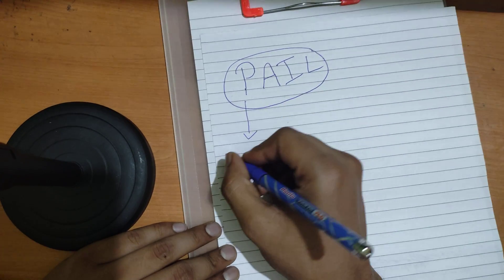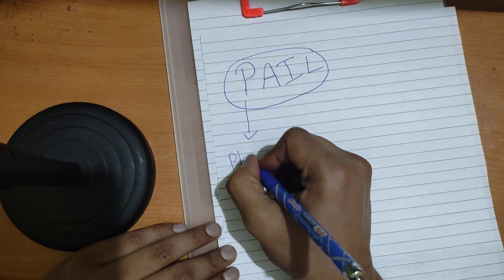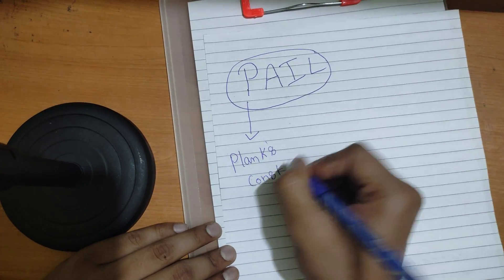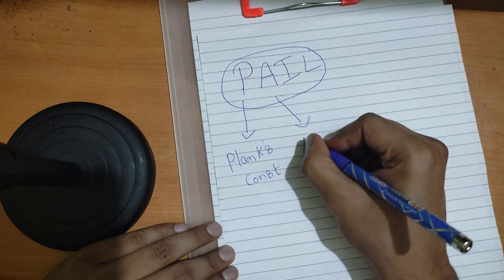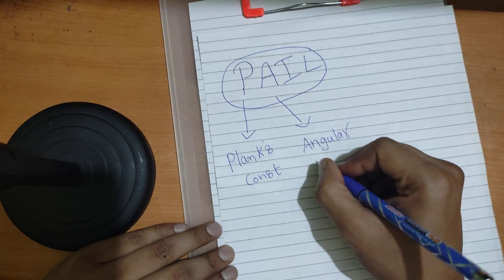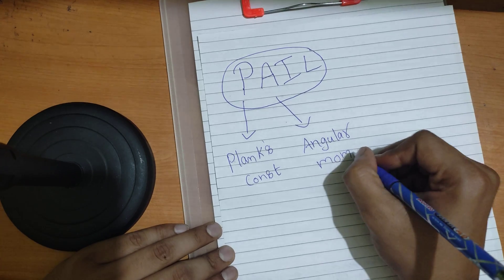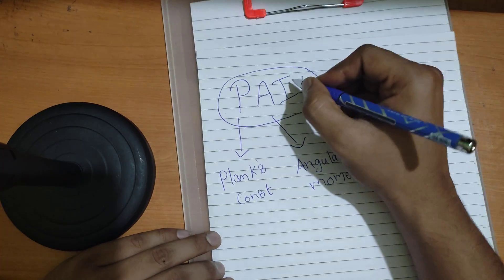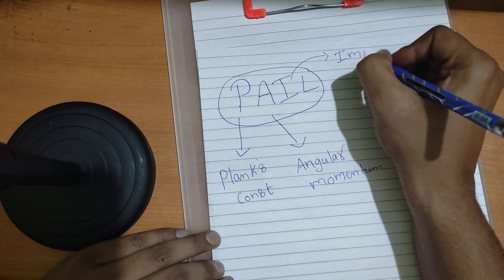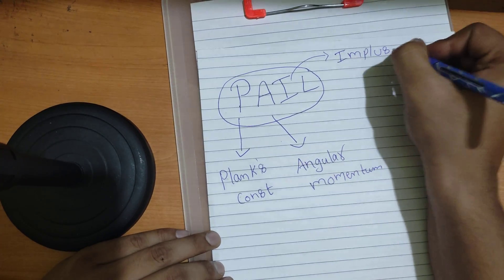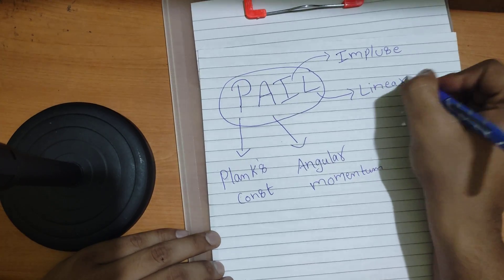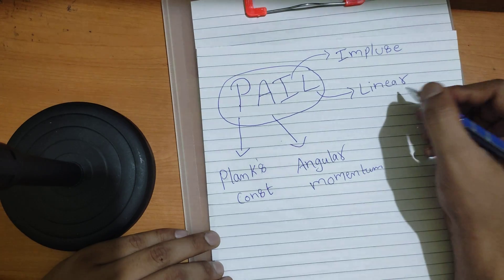P denotes Planck's constant. A denotes angular momentum. I will be writing here — I denotes impulse. L, as usual, denotes linear momentum, because here we have angular momentum and here we have linear momentum.